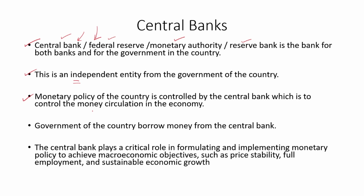The Central Bank is the entity in an economy that controls interest rates. If interest rates go up, money circulation in the economy will go down. If interest rates go down, money circulation will go up. This is controlled by the Central Bank. The government of the country borrows money from the Central Bank, which serves as the bank for government and for other banks.